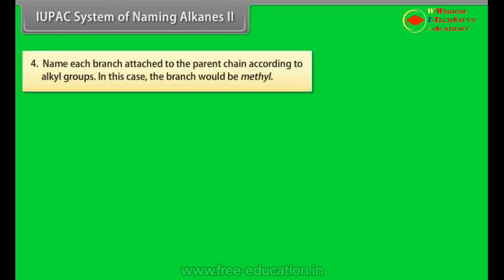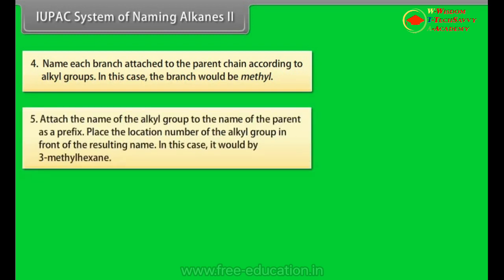IUPAC system of naming alkanes part 2. Number 4: Name each branch attached to the parent chain according to alkyl groups. In this case, the branch would be methyl. Number 5: Attach the name of the alkyl group to the name of the parent as a prefix. Place the location number of the alkyl group in front of the resulting name. In this case, it would be 3-methylhexane.